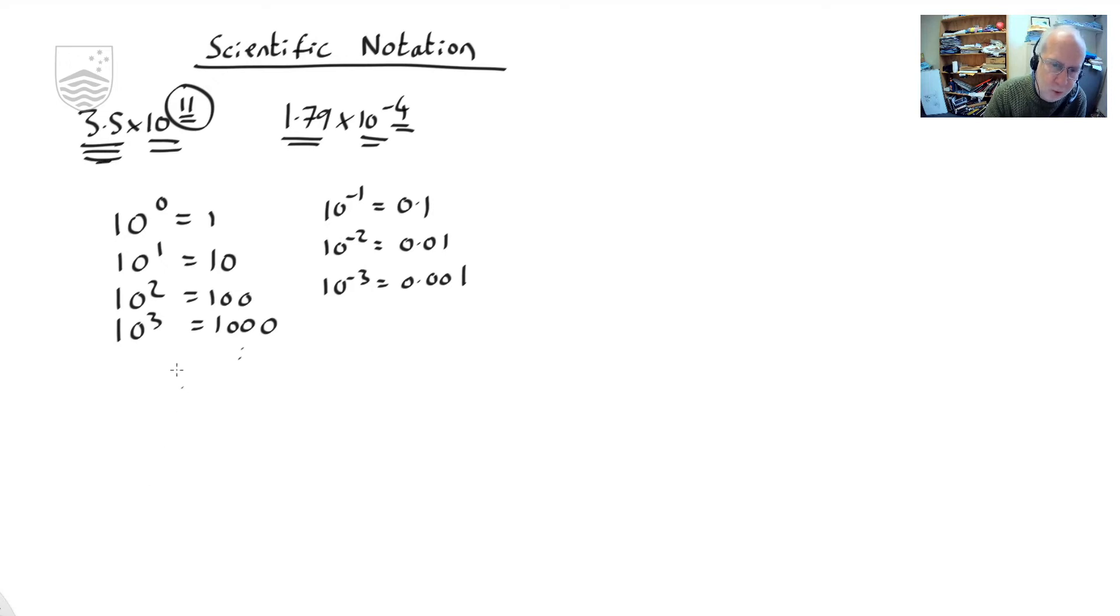How about the numbers in front? So let's say 3.5 by 10 to the 5. 10 to the 5 is 1 with 5 zeros. 1, 2, 3, 4, 5. So 3.5 would be 3, 5, 0, 0, 0, 0. Likewise, 1.7 times 10 to the minus 2. Now 10 to the minus 2 is 0.01. This is going to be 0.017.